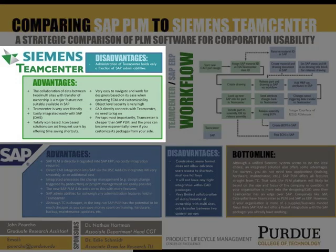Teamcenter is the primary competitor to SAP, and it holds its biggest advantage in the data exchange between two sites. Collaboration of data between two multi-sites with transfer of ownership is a major feature not suitably available in SAP. That's one of its biggest advantages.